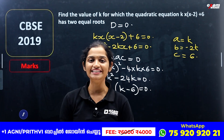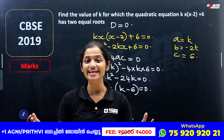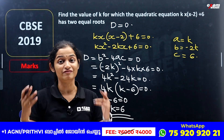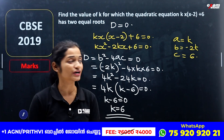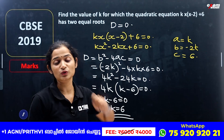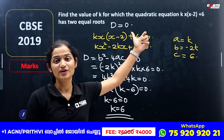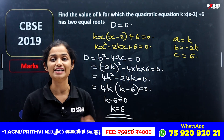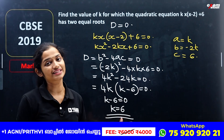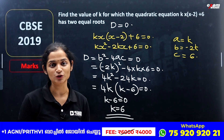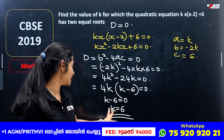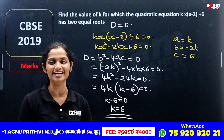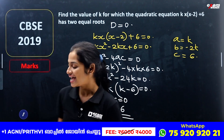We had to find the k value when this quadratic equation has two equal roots. So k is equal to 6.